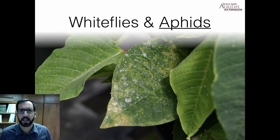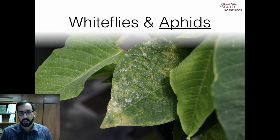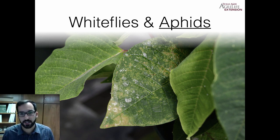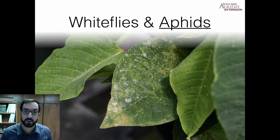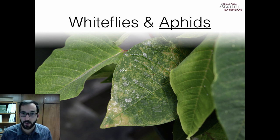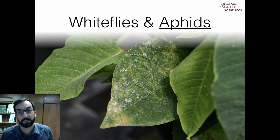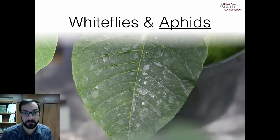Moving on to aphids — like whiteflies, they are sucking insect pests and produce honeydew. If you ever see a shiny leaf surface and you haven't recently watered, there's a good chance that's honeydew. If you feel it and it's sticky, start looking on the underside of leaves. Those little white things on the underside are actually whiteflies — a telltale sign that you've got a big population of sucking insect pests.